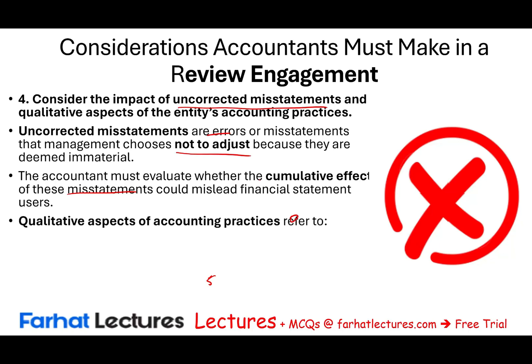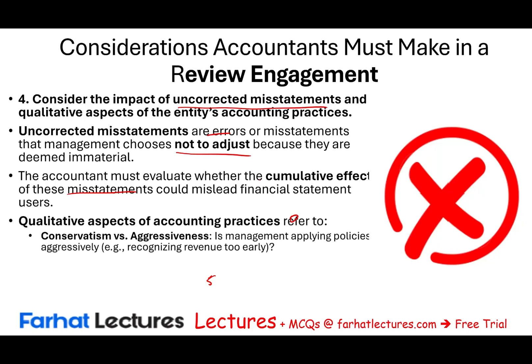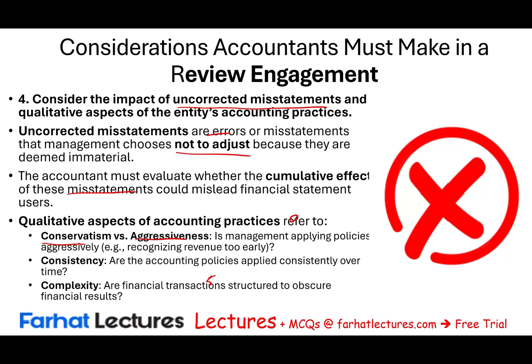The qualitative aspects of accounting refer to conservatism versus aggressiveness. Is management's policy aggressive? Are they recognizing revenue too early? Are they consistently using the same policies from period to period, because you want the financial statements to be comparable? And also the complexity of transactions — are financial transactions structured to obscure financial results? We would look at all of those.